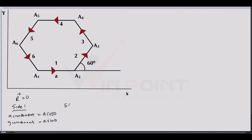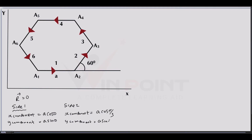Now for side 2. Side 2 makes an angle of 60 degrees with the x-axis. The x-component equals a·cos(π/3) — writing 60° as π/3 — and the y-component equals a·sin(π/3).